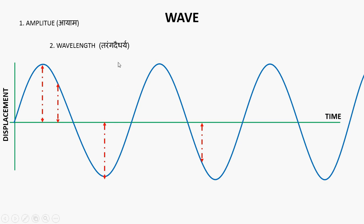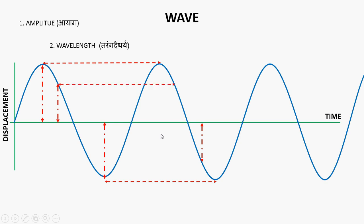Next we have the definition of wavelength. Wavelength is the distance between two successive crests or two successive troughs. More precisely, it is the distance between two successive points that are in the same phase. So we call this wavelength — the distance shown between corresponding points on the wave.